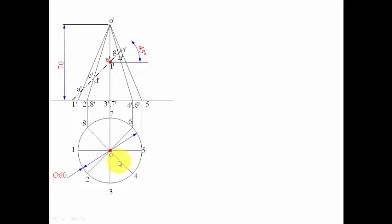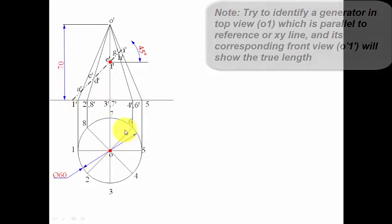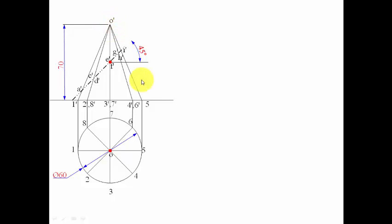We need to identify a generator parallel to the XY line. In the top view, generator O1 is parallel to the XY line, so its front view O-dash 1-dash shows the true length. Generator O5 is also parallel to XY, so O-dash 5-dash is also a true length. Both lengths are equal, so either can be used.